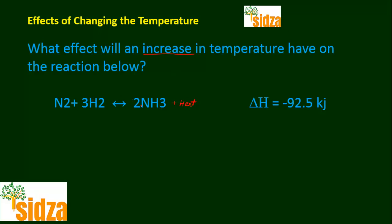In the forward reaction, nitrogen and hydrogen combine to form ammonia and heat is released. In the backward reaction, ammonia decomposes back to nitrogen and hydrogen, and in this process ammonia actually absorbs heat. So when you increase temperature, the equilibrium will try to utilize that excess heat, and that's possible only when the backward reaction is favored — meaning the equilibrium shifts in the backward direction.